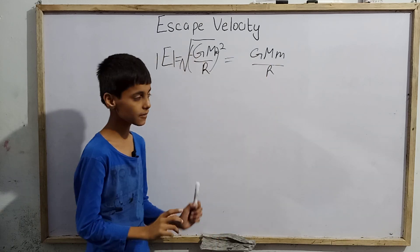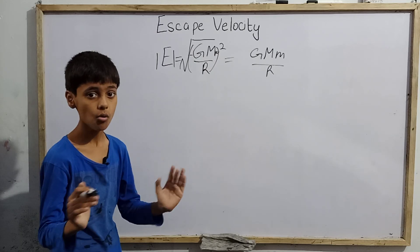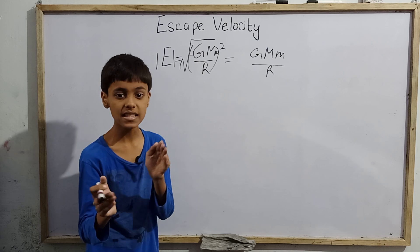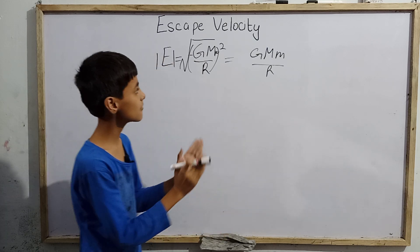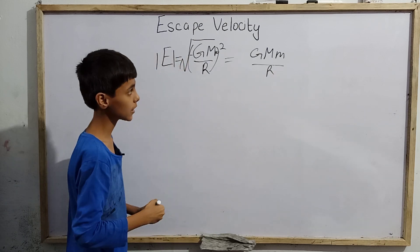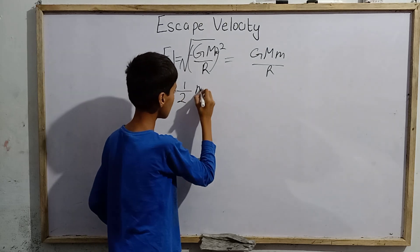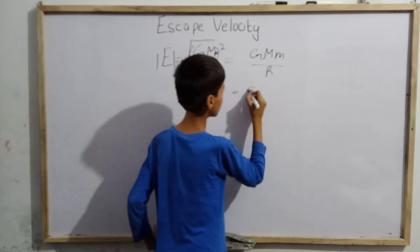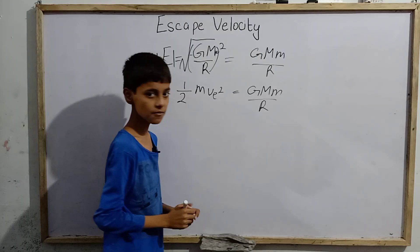Now we can understand escape velocity very easily. We imagine a case in which the kinetic energy provided to any particle is equal to the binding energy of that particle. So what we can write according to this case: half mv_e squared equals GMm divided by r. This case will happen because we are imagining such a case where kinetic energy equals binding energy.